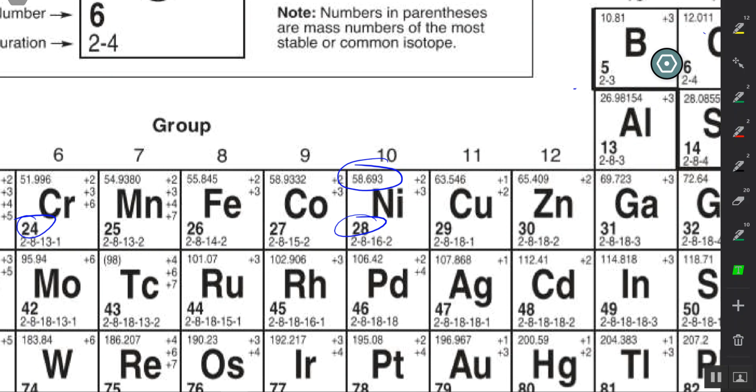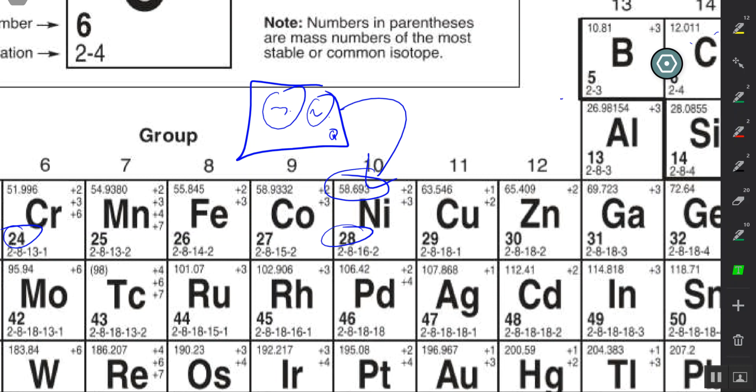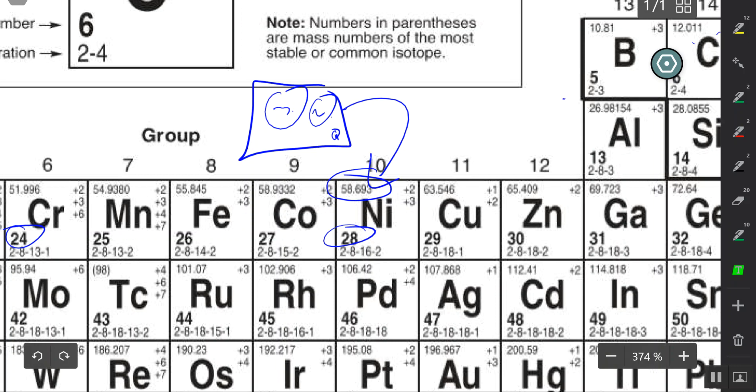So if I was thinking about nickel, maybe I'll have nickel-58, maybe I'll have a bigger atom nickel-59, maybe I'll have nickel-60. The average mass of all these atoms equals the atomic mass of nickel.